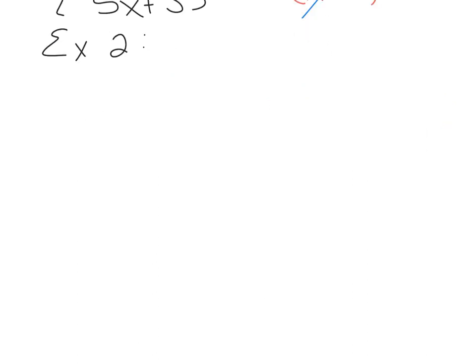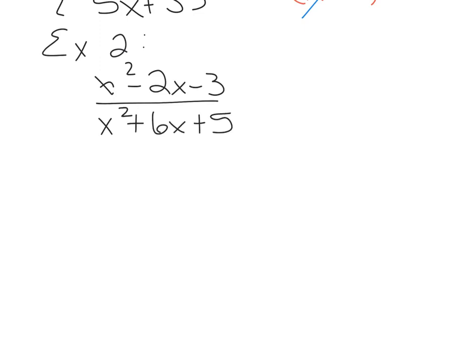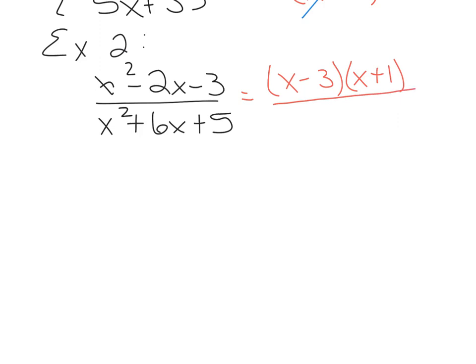Example 2 on the same page says x squared minus 2x minus 3 over x squared plus 6x plus 5. You are tempted to cancel off these x squareds, but you cannot do that because they are terms — they're being added and subtracted. So you have to factor the numerator and the denominator. These are standard trinomials. When I factor them, I'm going to have x minus 3 times x plus 1. If you don't know how to get those factors, look below in the description for linked videos on factoring.